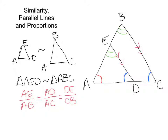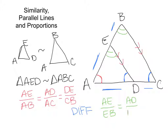There's another cool proportion known as the triangle proportionality theorem. This theorem says that the relationship between the two shorter segments AE over EB is the same ratio as AD over DC. It's a different ratio from the similarity ratio, but it can help us find out things about these two triangles. The only reason this works is because of those parallel lines.